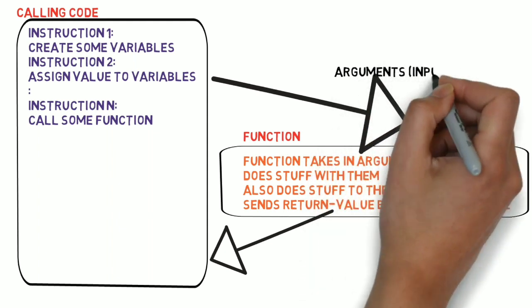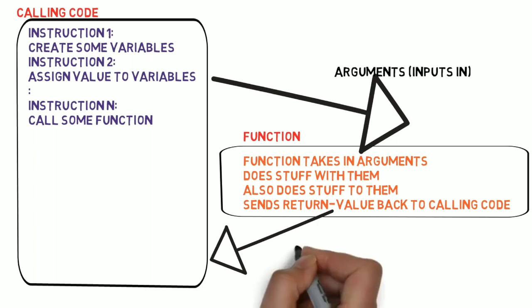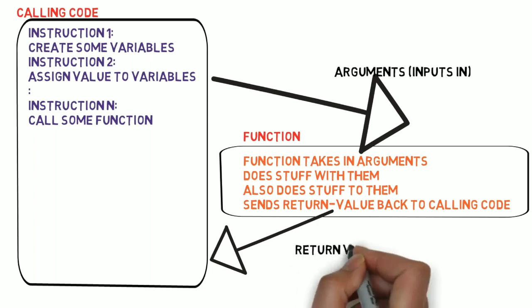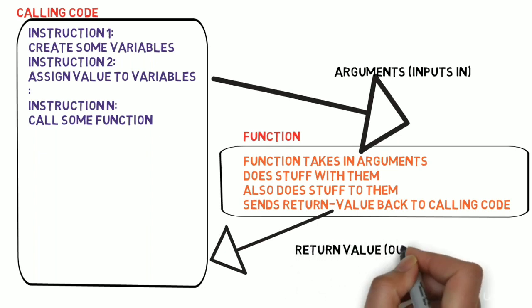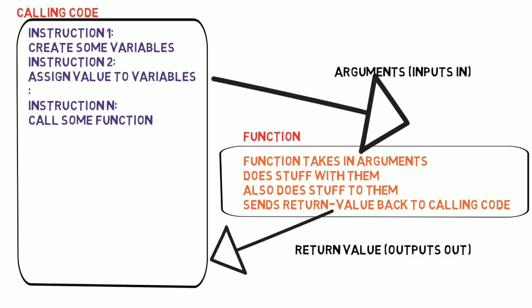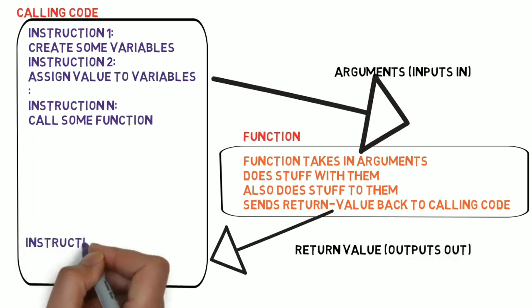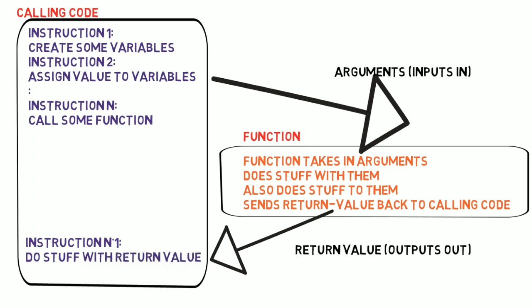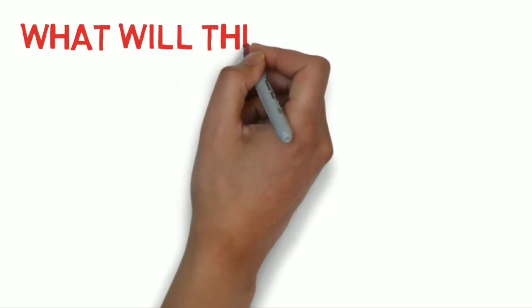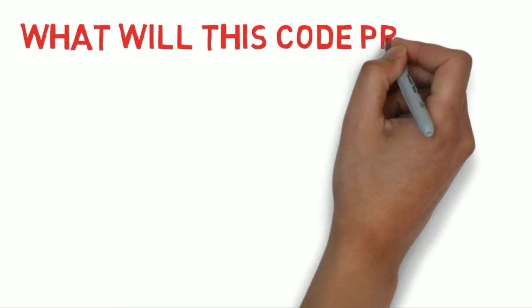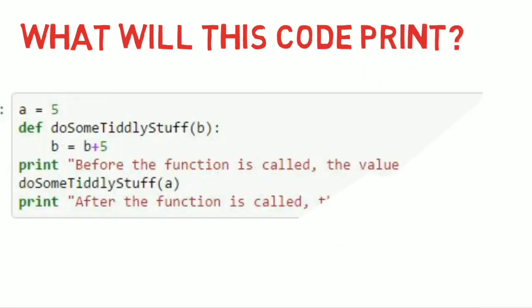Arguments are inputs that are passed to a function and the return value is the output which comes out after a function does stuff with the arguments. Then the calling code continues on and will do some stuff with the return value from the function. Variables which are created in the calling code and then passed in as arguments to the function behave in a certain way — this is a little bit tricky, so let's go into it in a little detail.